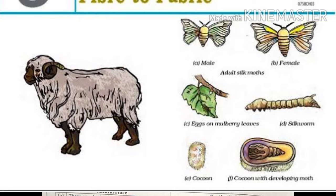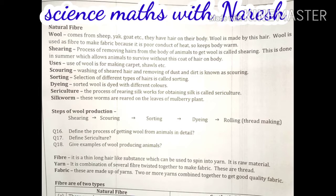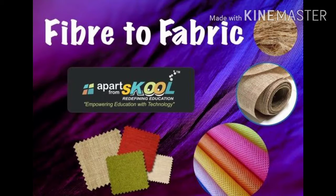Natural fiber — the meaning is clear from the word itself. 'Natural' means nature, and 'fiber' means the thread or raw material for fabric which comes from things made by nature, such as animals, plants, insects, etc. The first one is wool, which comes from sheep, goat, etc.